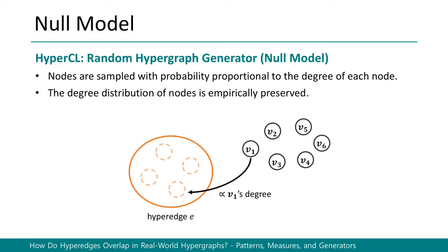Before sharing our observations, we introduce our norm model. We propose HyperCL, which is based on the Chung-Lu model in graph generation. Given the distributions of hyper-edge sizes and node degree distributions, for each hyper-edge, we sample nodes with probability proportional to the degree of each node. Hypergraphs generated by HyperCL empirically preserve the input degree distribution.